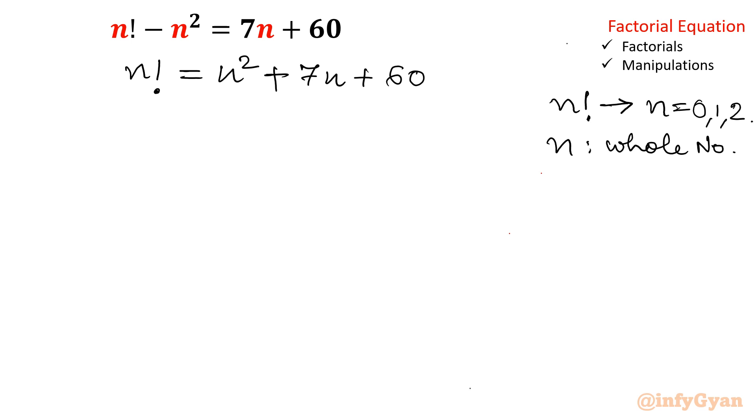Now I will divide both sides by n. Now I can write n factorial as we know n into n minus 1 factorial. So I will write n times n minus 1 factorial.